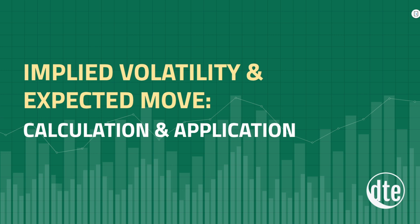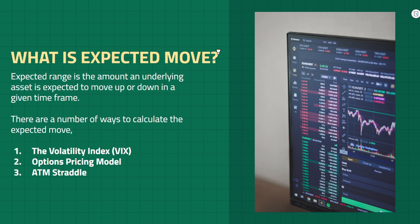In this video we will explore the calculation and application of the expected move, specifically when trading zero DTE options, and how the expected move can help inform your trading decisions and manage risk. The expected move, also known as the expected range, is the amount an underlying asset is expected to move up or down in any given time frame. When trading zero DTE options, the expected move can help us understand the potential movement for the asset on that particular day, allowing us to set realistic profit targets and manage risk more effectively.